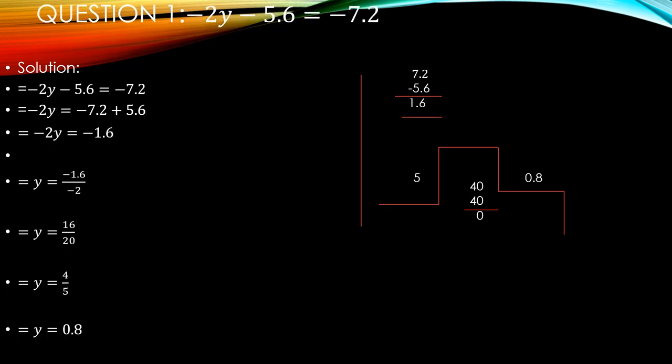Let's start question number 1, which is the linear equation in one variable: minus 2y minus 5.6 is equal to minus 7.2. Let's start the solution. You can see there are two sides, right hand side and left hand side. First, you write the question again in the solution. Now, the like terms will be added and subtracted in algebra. But in the equation, if you move from right to left or left to right, the sign will change. Minus change into plus, plus change into minus, multiply change into division and division change into multiplication.